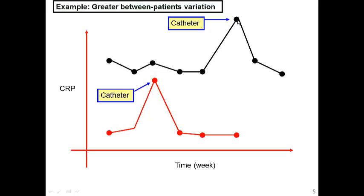Both patients show an increase in CRP level when they use a catheter. When you use linear regression, the model assumes all observations are independent, so it considers these observations as coming from different patients. It assumes they should be as different as data from two completely different people — which is clearly a biased p-value calculation, since data from a single patient is much more similar than data between two different patients.